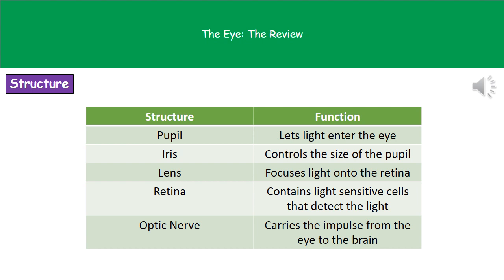Inside the eye we have the lens. The whole purpose of the lens is to focus the light that enters the eye onto the retina. The retina contains those light-sensitive cells which detect the light and convert it into electrical impulses. Finally, the optic nerve is the nerve that carries that impulse from the eye to our brain.